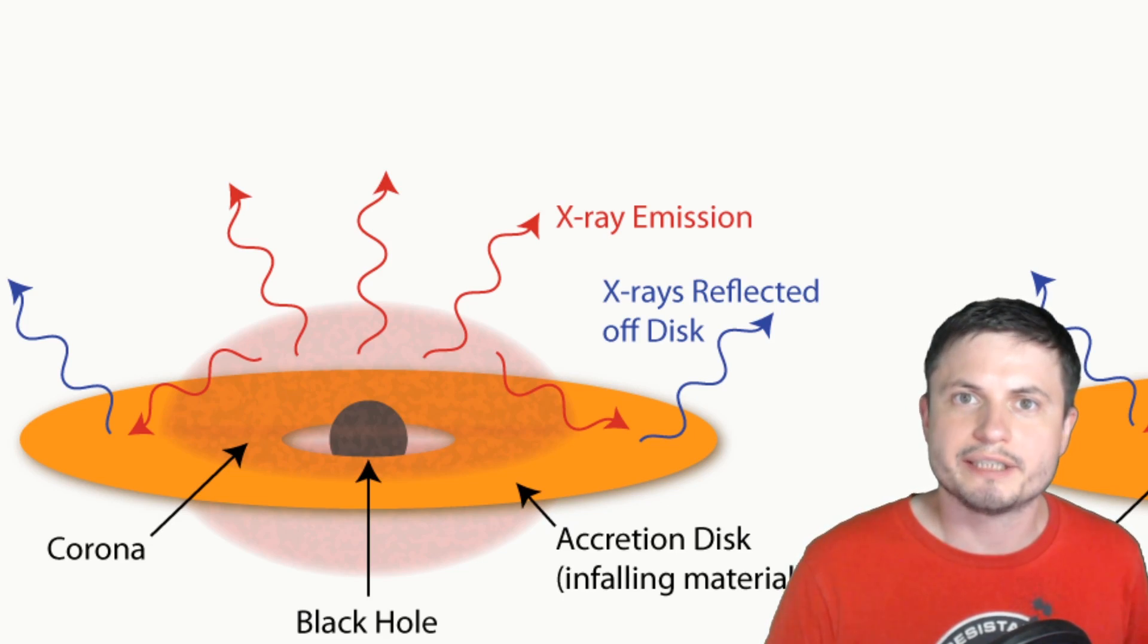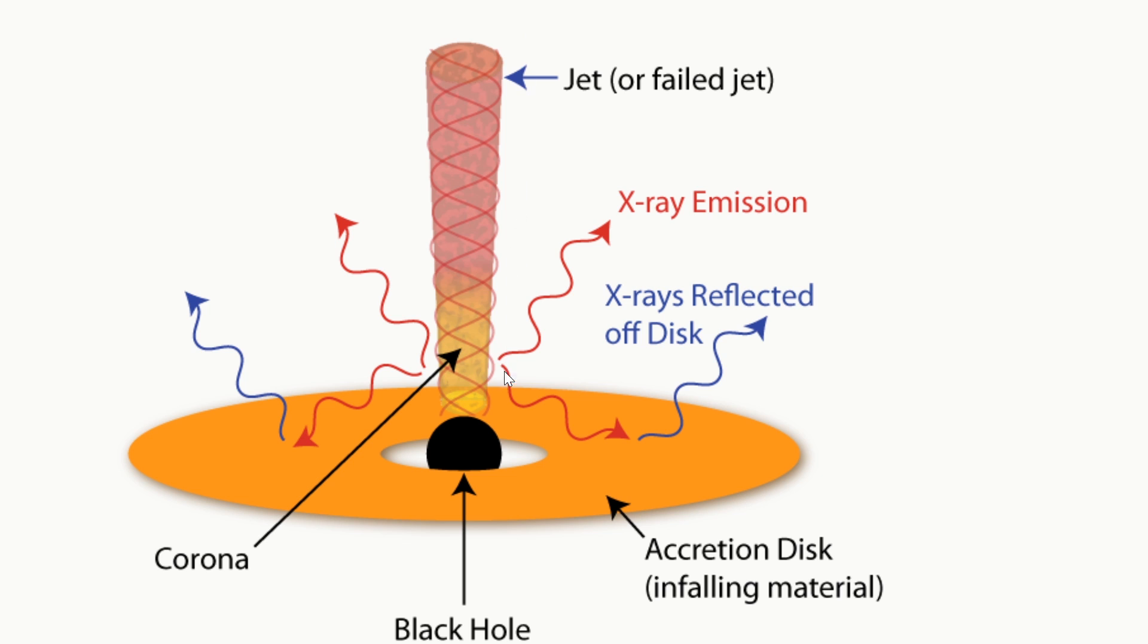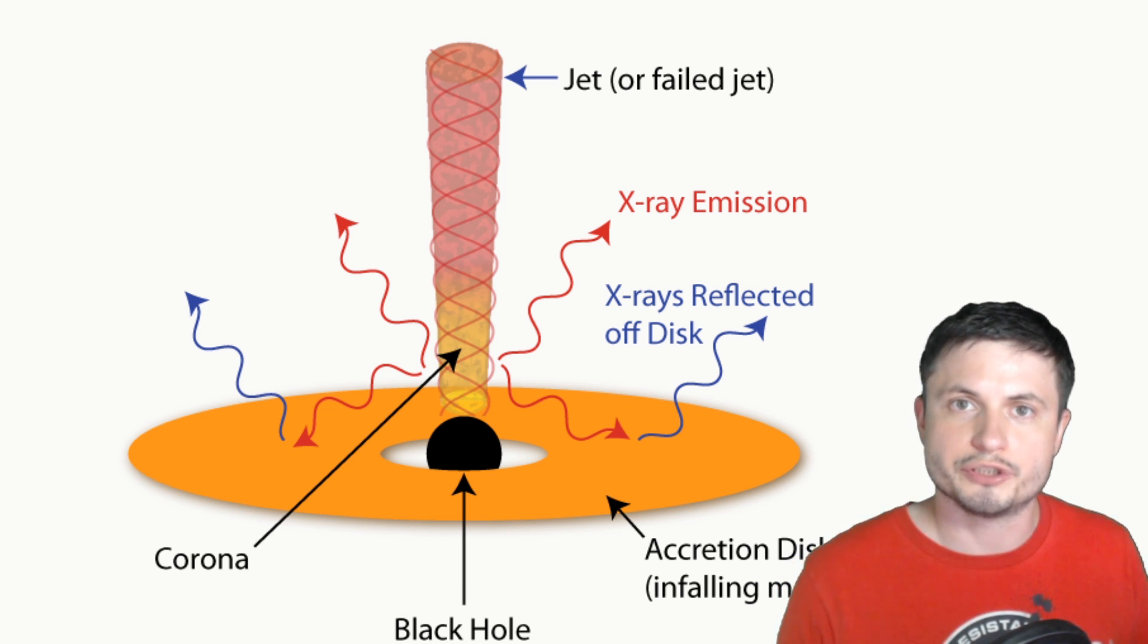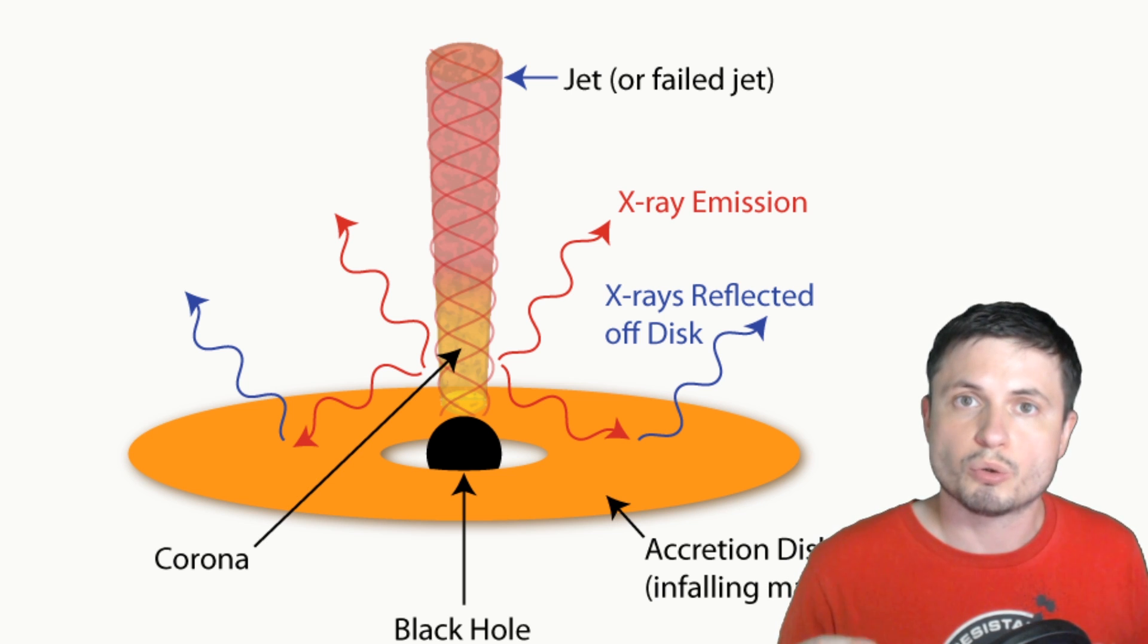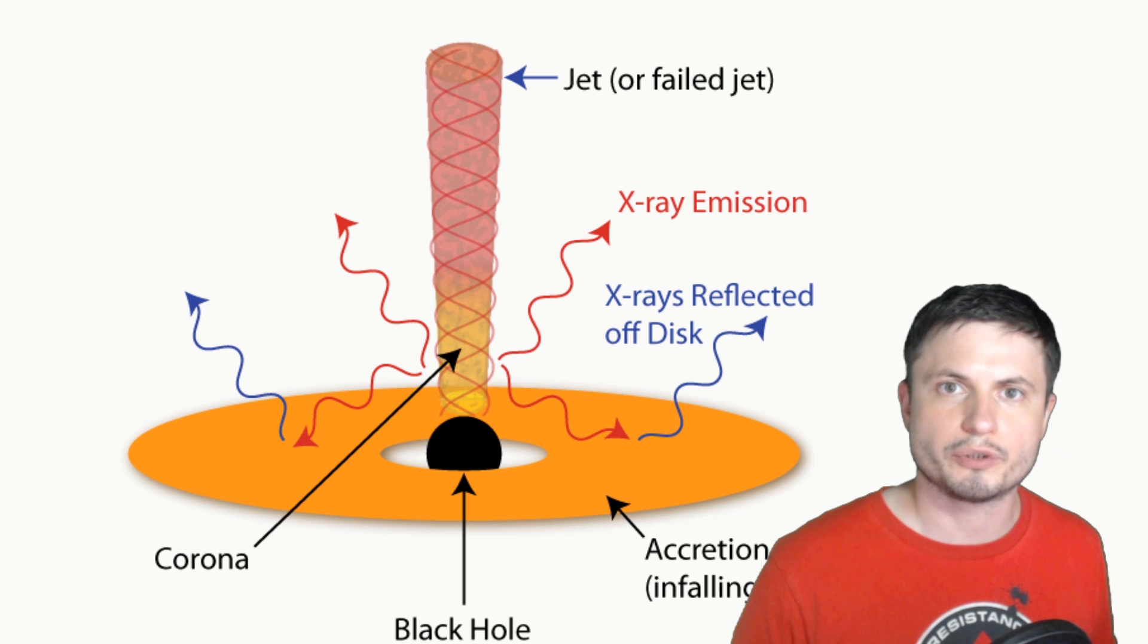And this illustration by Dan Wilkins of Stanford University kind of shows you what these two models are. We have the so-called sandwich model, which presents the corona as literally sandwiched between the accretion disk around the black hole, or the lamppost model, which presents corona as a kind of a long tube-like formation that forms through the rotational action of the black hole and the accretion disk itself. We don't really know if black holes just go between these two stages, or if one model is more correct than the other, but they both seem to make sense.